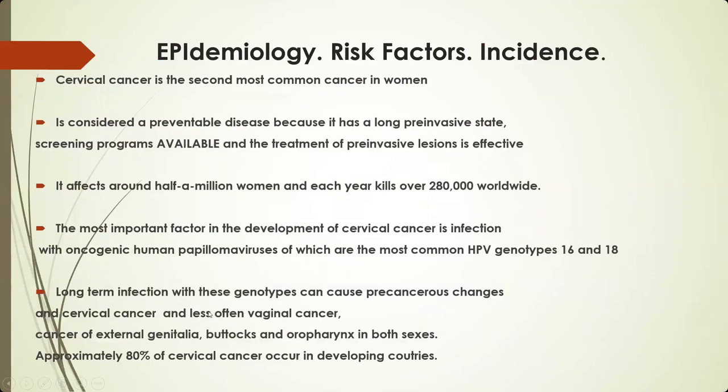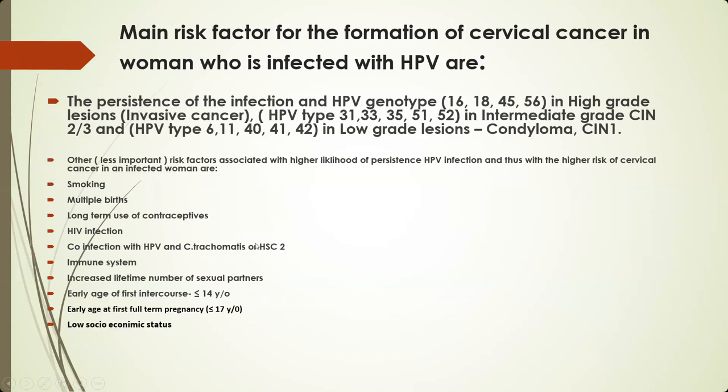Cervical cancer is the second most common cancer in women and is considered a preventable disease because it has a long pre-invasive state, screening programs available, and the treatment of pre-invasive lesions is effective. It affects around half a million women and each year kills over 280,000 worldwide. The most important factor in the development of cervical cancer is infection with oncogenic human papilloma viruses, of which the most common HPV genotypes are 16 and 18. Long-term infections with these genotypes can cause precancerous changes and cervical cancer, and less often vaginal cancer, cancer of external genitalia, and oropharynx in both sexes. Approximately 80% of cervical cancer occurs in developing countries.